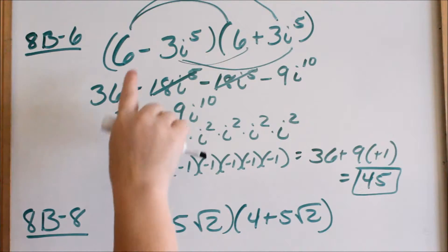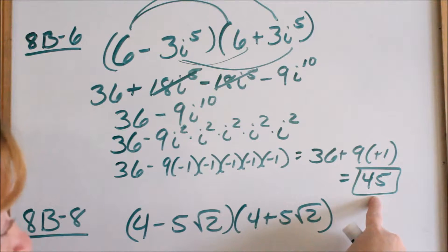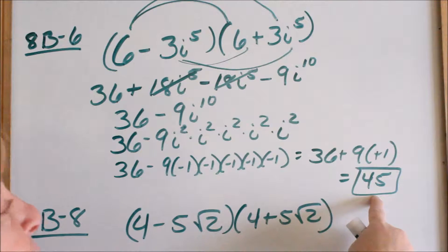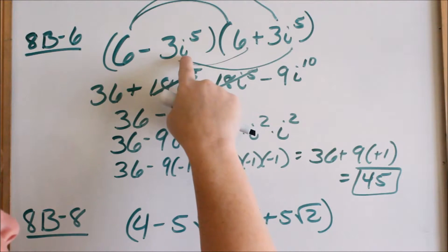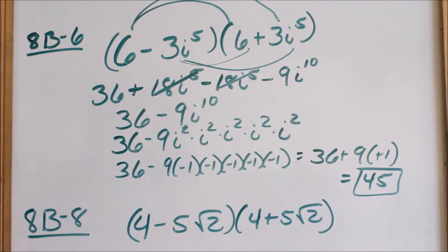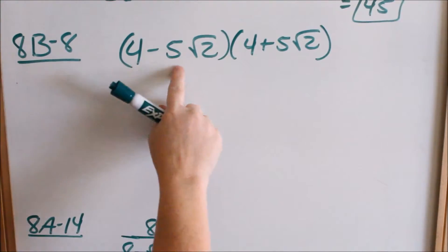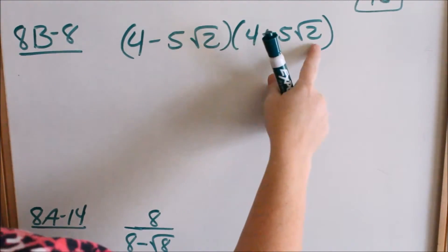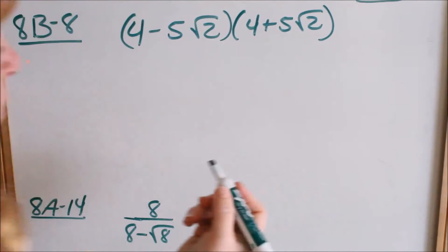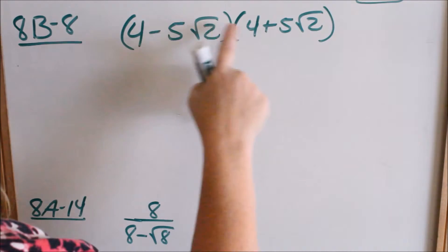It seems very strange to multiply these two parentheses to get a whole number of 45. When you have an i in your parentheses and you multiply conjugates, your i's will go away because you end up squaring these and then you can replace it with negative 1. You will see why conjugates are important here in just a minute — why it's important for the i's to go away. Same here. Look at 8b8: when you multiply these conjugates, your radical is going to go away. These are conjugates — they look exactly alike except the signs are different.